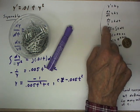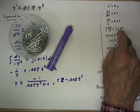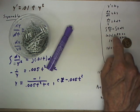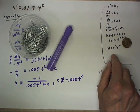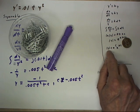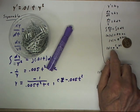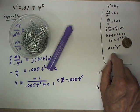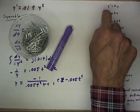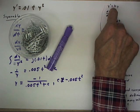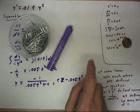So y prime equals ky becomes dy dt equals ky. And this is easily separated into dy over y equals k dt. That can be integrated. On the left we get a natural log, on the right we get kt plus a constant. The point is that this equation is a first-order, linear, homogeneous equation. It can be solved as such, but it can also be solved by separating the variables.